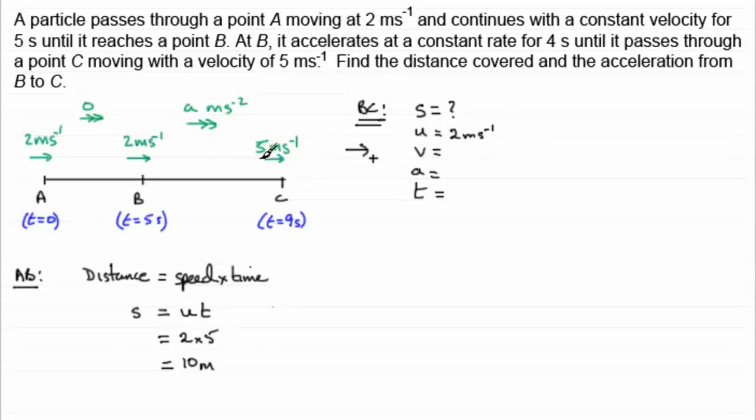V, the final velocity, 5 metres per second to the right. The acceleration A, well we've got to find that, so we don't know that at the moment. T, the time, well it took 4 seconds to go from B to C, so we've got 4 seconds there.